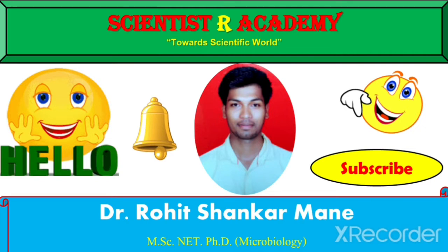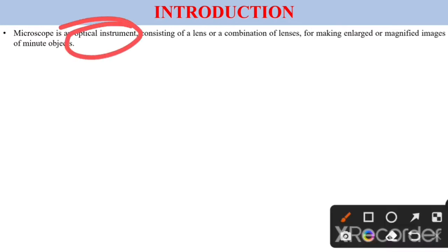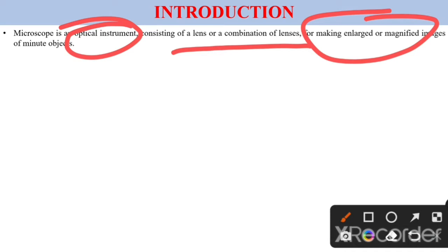First, let's understand the introduction of compound microscopy. What is a microscope? A microscope is an optical instrument which consists of lenses or a combination of lenses for making an enlarged or magnified image of a minute object.